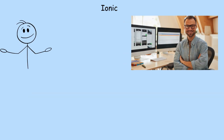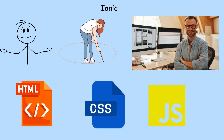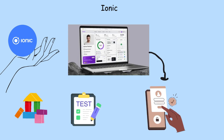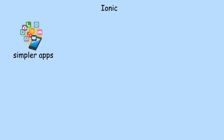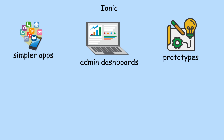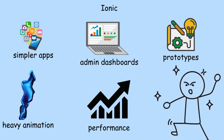Ionic. If you're a web developer, this one's your comfort zone. Ionic uses HTML, CSS, and JavaScript — the same stuff you use for websites. You can combine it with frameworks like Angular, React, or Vue. It runs inside a web view, meaning it's like a web app packaged to behave like a mobile app. That makes it super quick to build and test. It's perfect for simpler apps, admin dashboards, or prototypes, but it's not ideal for animation-heavy or performance-demanding apps.